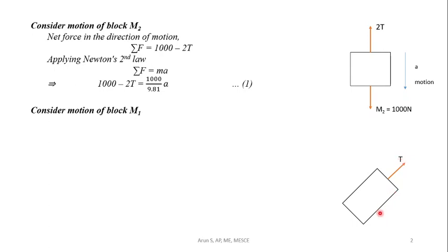Friction force F equals 212.13 acts down the plane. The weight component along the plane is M1 sin 45.